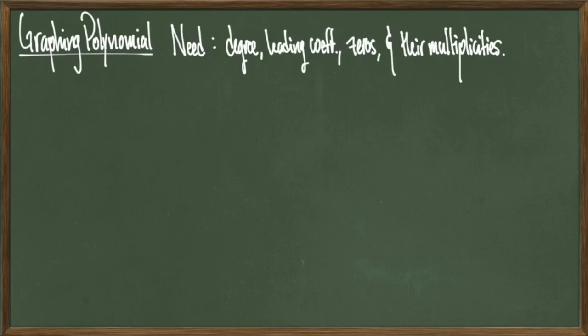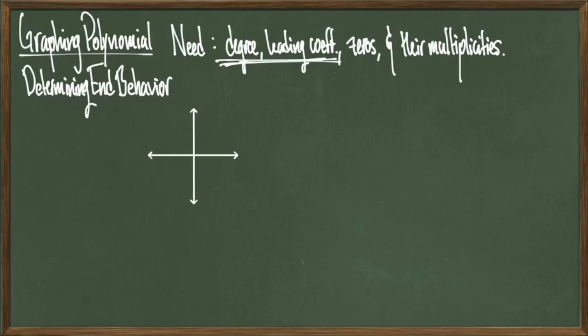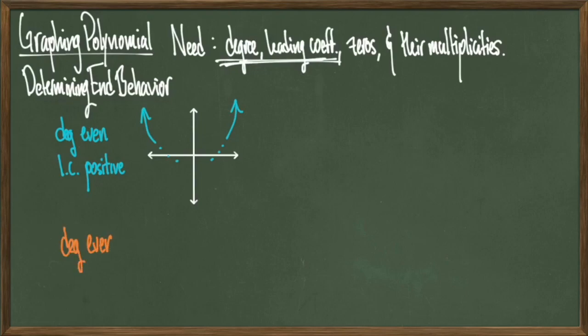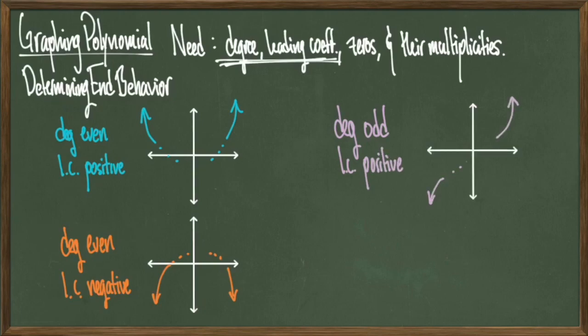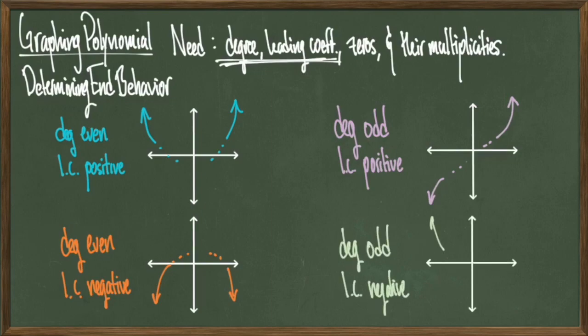When drawing a polynomial the first thing you need to do is determine its end behavior. End behavior is what's going to happen with this graph at infinity, and it's determined by our degree and the sign of our leading coefficient — giving us four possibilities. If the degree is even and the leading coefficient is positive, both arrows point up towards positive infinity. If the degree is even and the leading coefficient is negative, both arrows point down towards negative infinity. If the degree is odd and the leading coefficient is positive, the left tail points down and the right tail points up. If the degree is odd and the leading coefficient is negative, the left tail points up and the right tail points down.